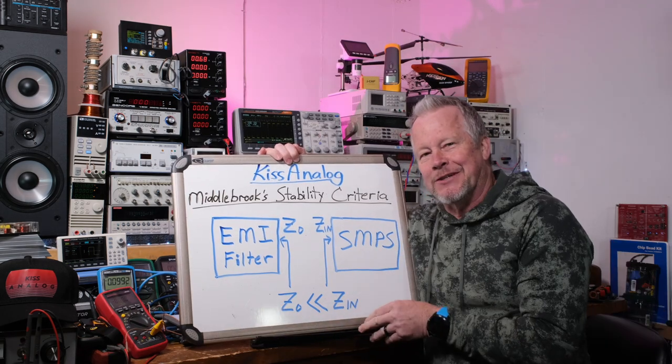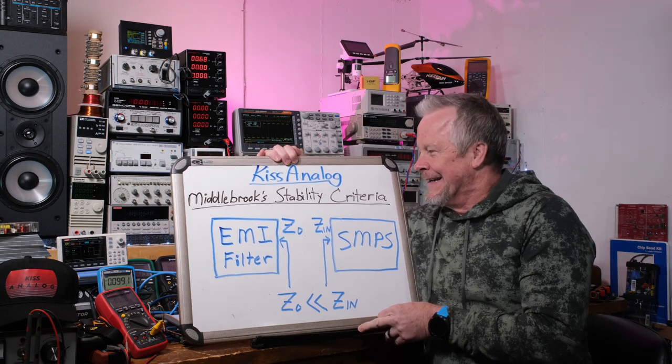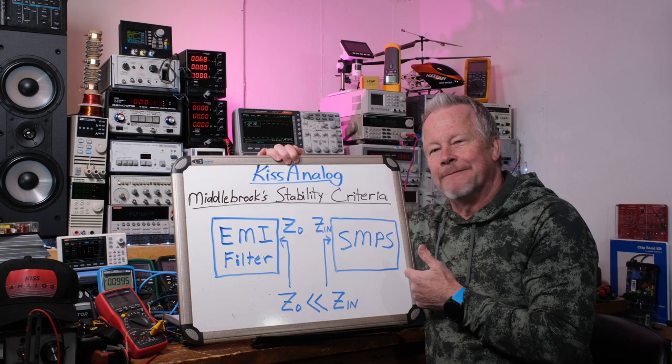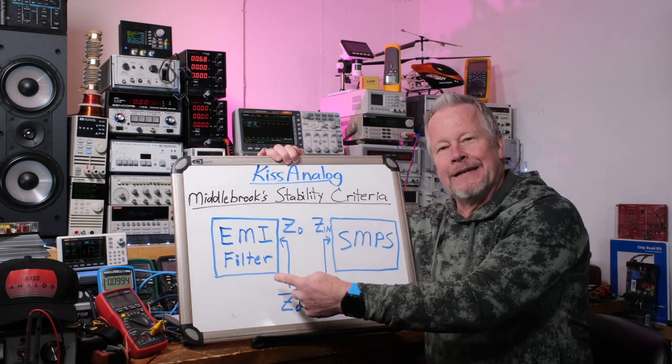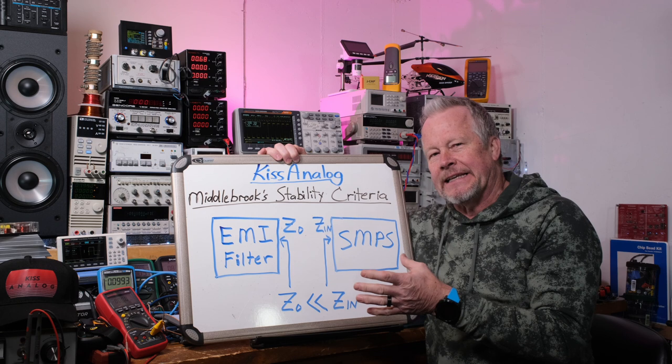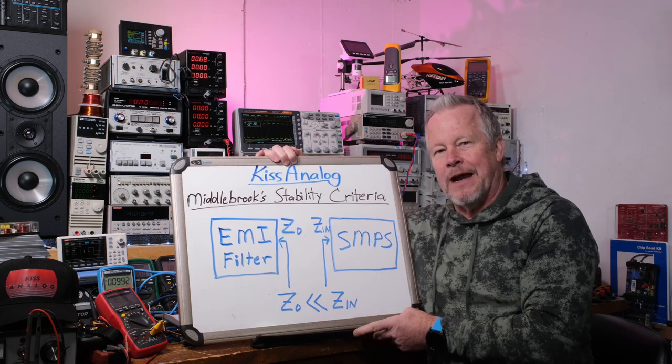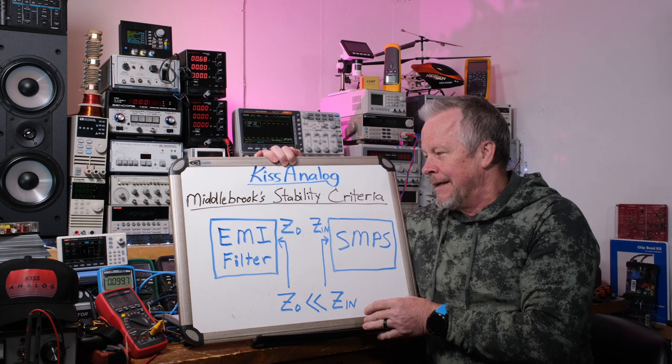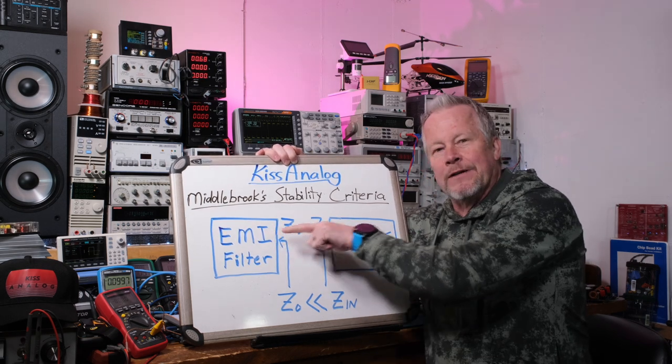If you're working with switching power supplies, which are popping up everywhere these days even in audio, there's a good chance you'll be working with one. And even if you're just interested in the technology and how they're designed, I think this would be an interesting video. So let's get to my first slide — my actual whiteboard. The Middlebrook stability criteria: if we have an EMI filter and a switch mode power supply, this is kind of a classic block diagram for introducing this concept.